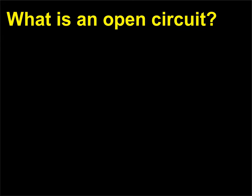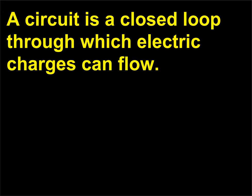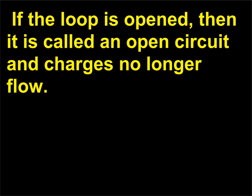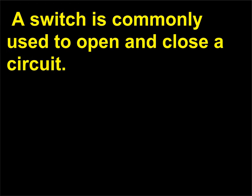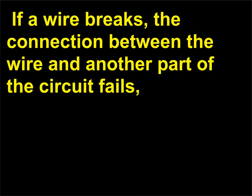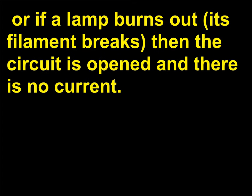What is an open circuit? A circuit is a closed loop through which electric charges can flow. If the loop is opened, then it is called an open circuit and charges no longer flow. A switch is commonly used to open and close a circuit. If a wire breaks, the connection between the wire and another part of the circuit fails, or if a lamp burns out and its filament breaks, then the circuit is opened and there is no current.